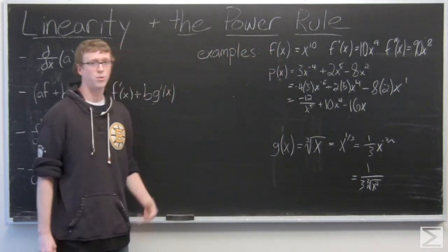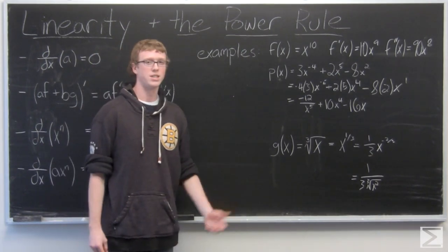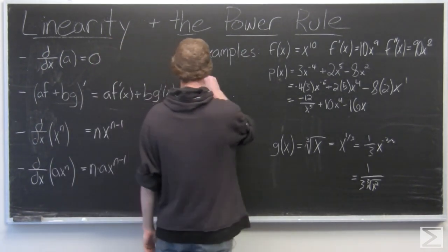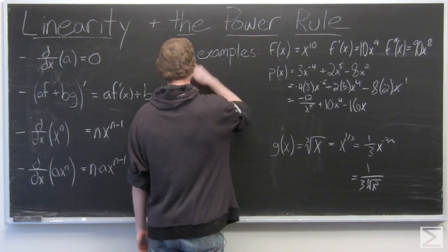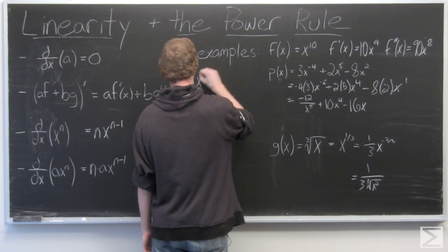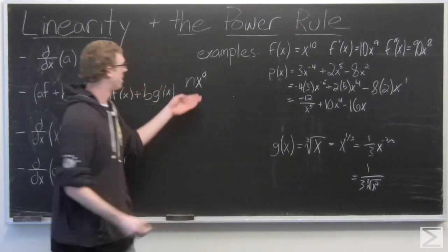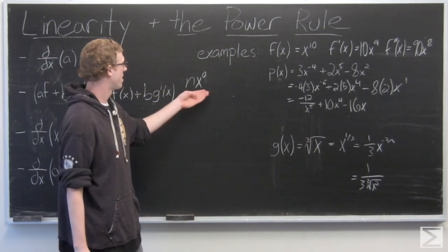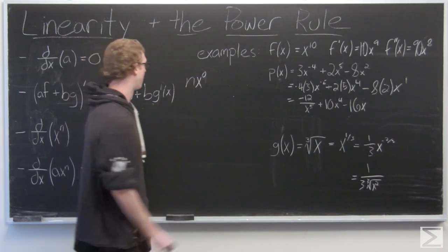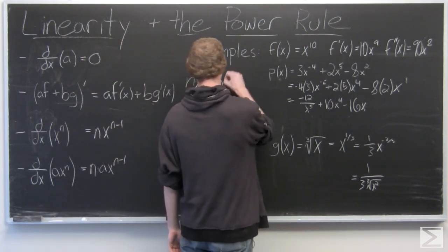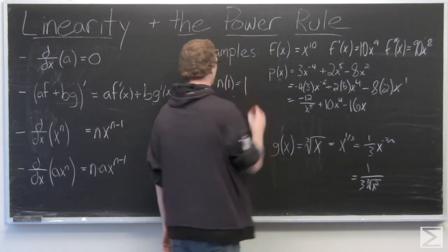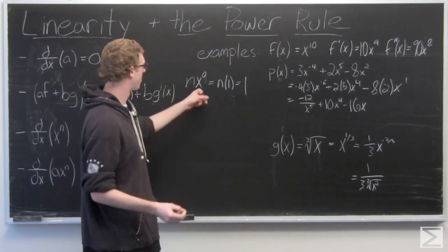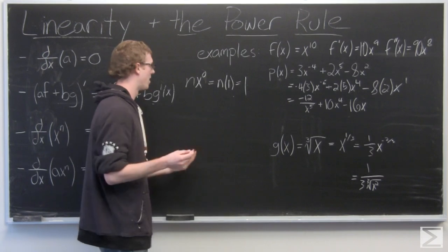Now the last thing we want to take a look at with the power rule, as I mentioned before, is powers of 0. Now say we have a function nx to the 0. This x to the 0 is just 1.